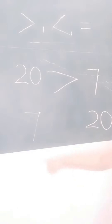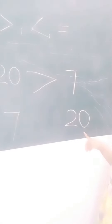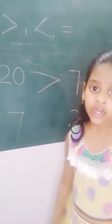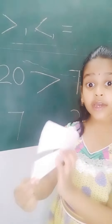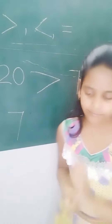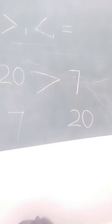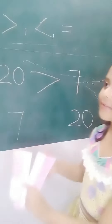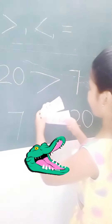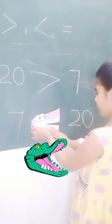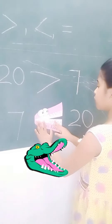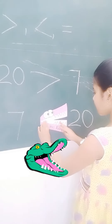Here 7 chocolates are there and here 20 chocolates are there. Now one more hungry alligator came, and the alligator will eat the 20 again.